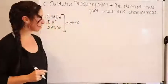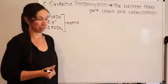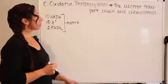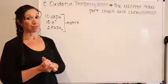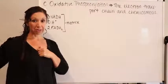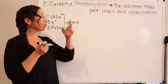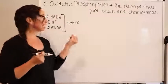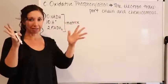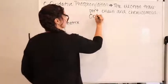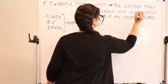Remember the word osmosis from our days studying water and cell membranes? Now we're putting the word chemi in front of it, so it's chemical osmosis — a little bit different, but same thought. Both the electron transport chain and chemiosmosis are occurring in the inner membrane of the mitochondria.